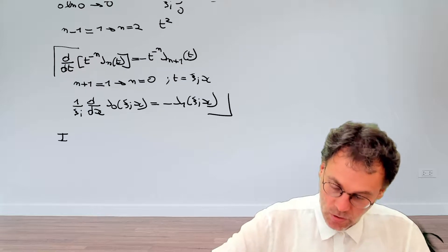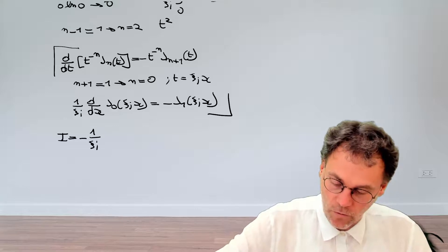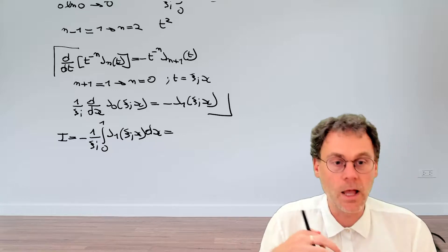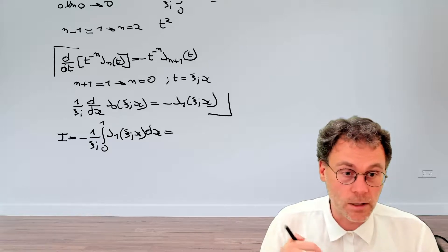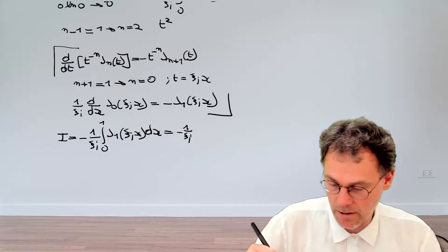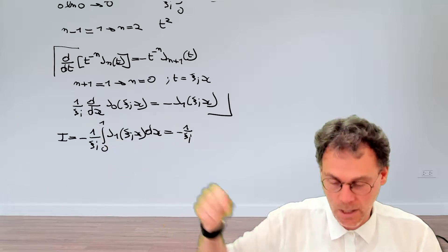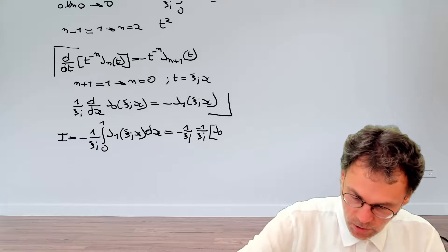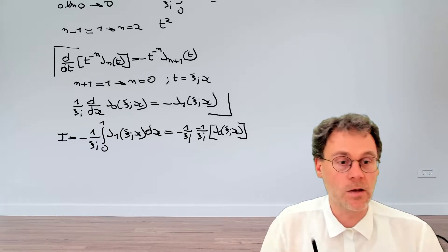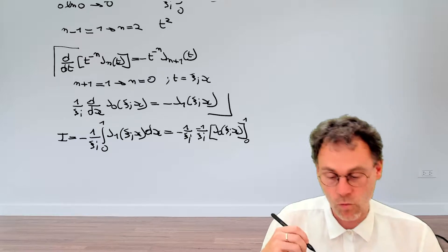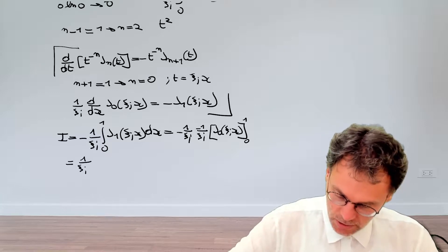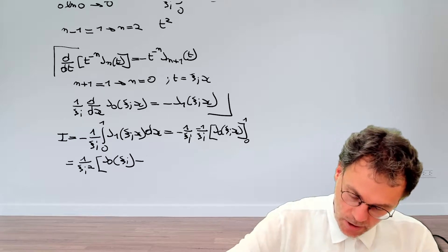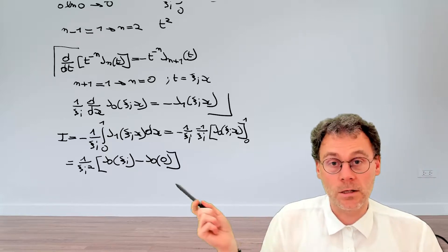So the integral we needed to solve was 1 over psi i integral from 0 to 1, Bessel function order 1 psi i x dx. And thanks to our hard work, we've shown that this is equal to minus 1 over psi i. And then we have another minus psi i there. So minus 1 psi i, j0 psi i x being evaluated between the bounds 0 and 1. That becomes 1 over psi i squared. Then for our upper bounds, we have j0 psi i minus j0 not.